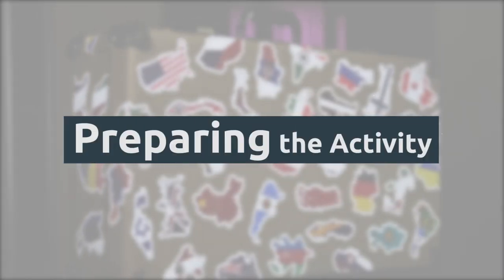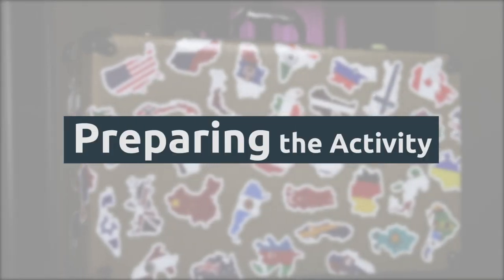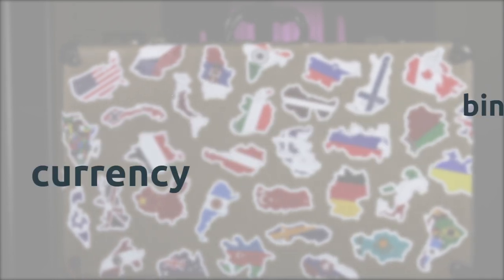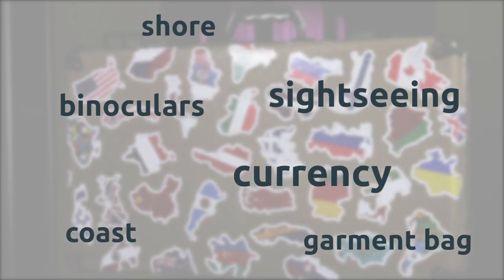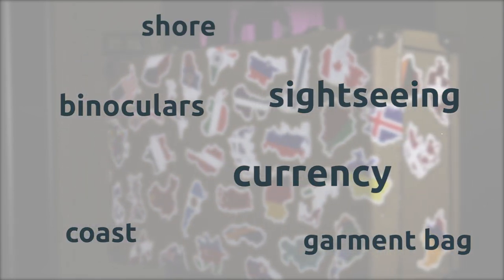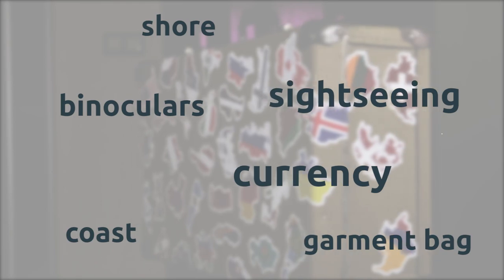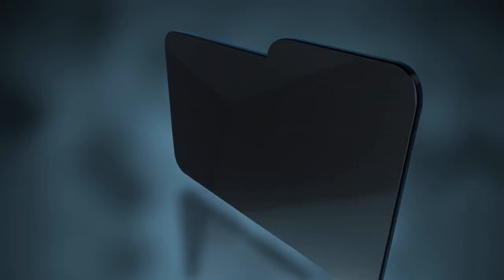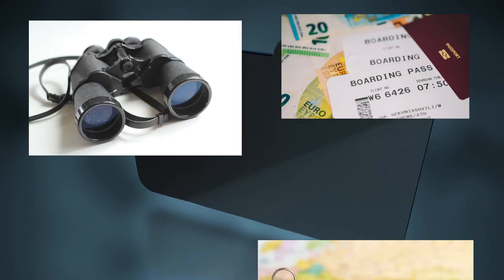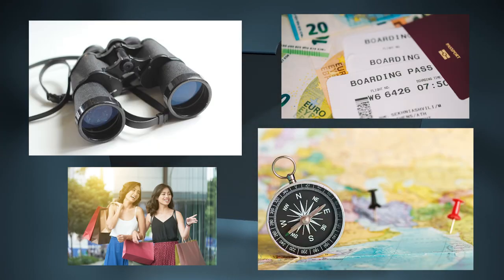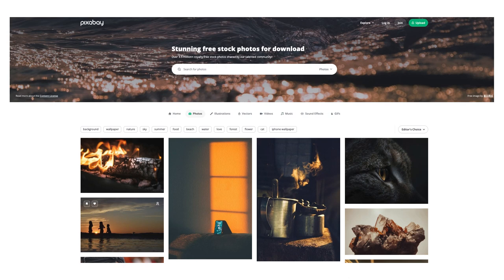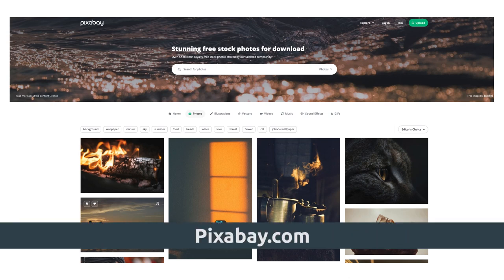Let's say that the topic of your next unit is traveling. This example uses words taken out of a text that students will read. To get ready, you need to prepare a folder on your computer desktop with an image to represent each word students will work on. We suggest you use a site like Pixabay to find copyright-free images.